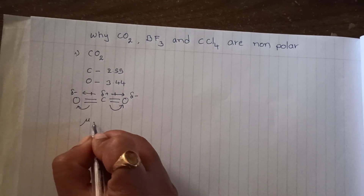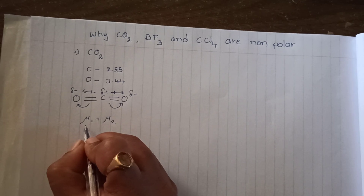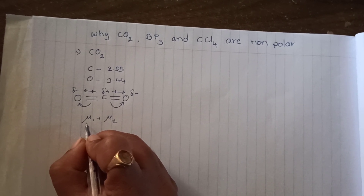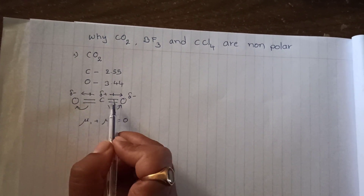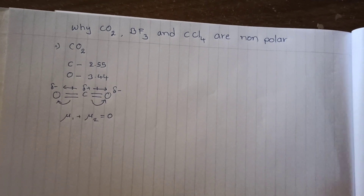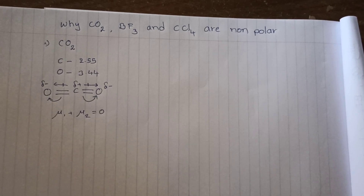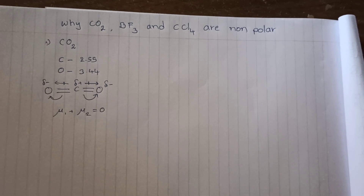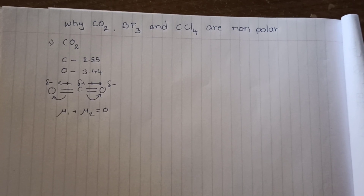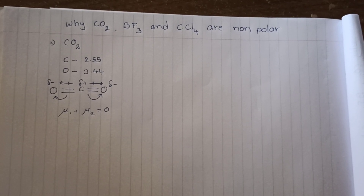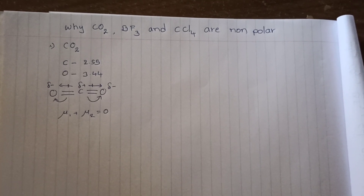The dipole moment is represented by mu (μ). So μ₁ plus μ₂ of this molecule becomes zero because they are in opposite directions. That is the reason why, even though carbon dioxide has two atoms with electronegativity difference, the net dipole moment becomes zero. When the dipole moment is zero, the charge of the molecule is zero, and when the charge is zero there is no polarity. That is the reason why carbon dioxide behaves as a non-polar molecule.